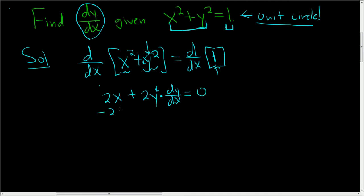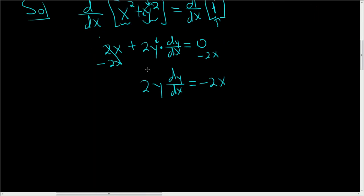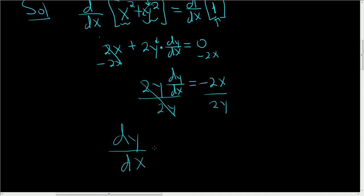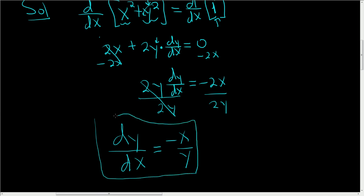To finish, we'll subtract 2x from both sides, so we end up with 2y dy/dx equals negative 2x. And now we'll just divide by 2y, giving us dy/dx equals negative x over y. This gives us the slope of the tangent line at any point on the unit circle.